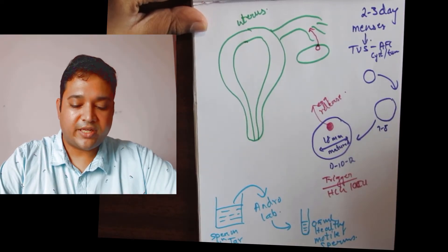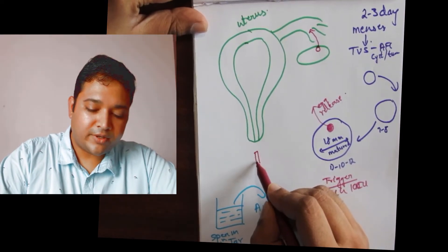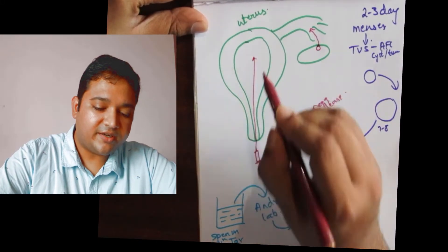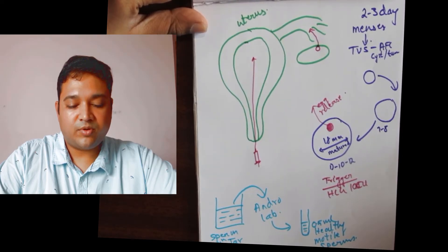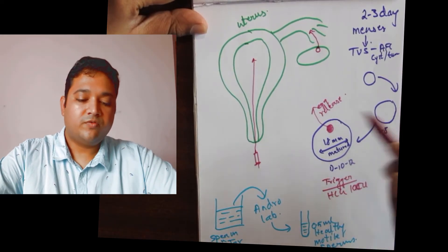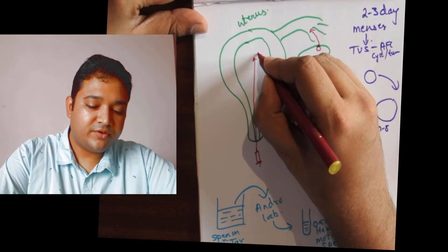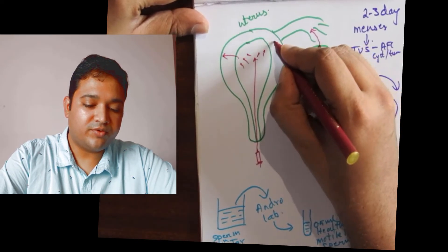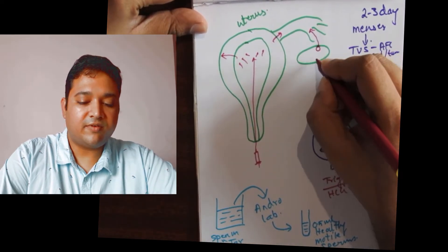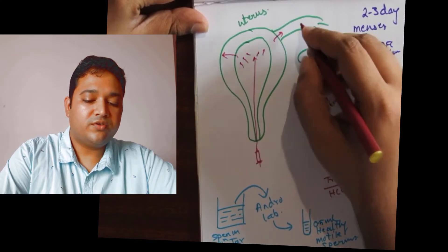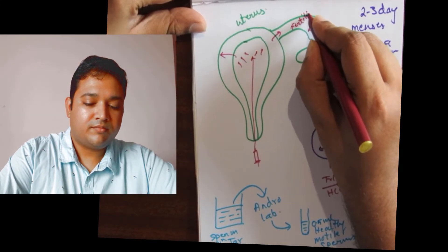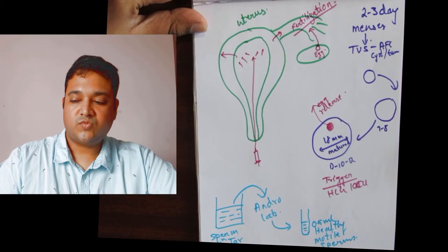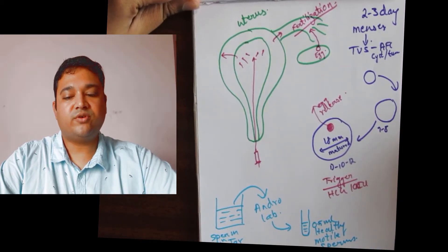These healthy motile sperms are then loaded onto an injection catheter and directly injected into the center of the uterine cavity using the IUI method. Once these sperms enter the uterine cavity, they travel into either of the fallopian tubes, where they interact with the wife's egg to cause fertilization. So this is, in short, how the IUI process works.